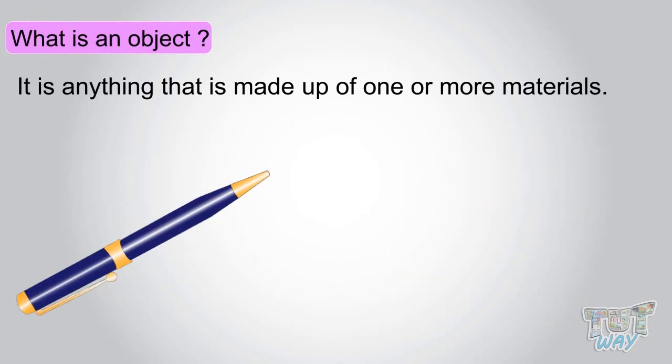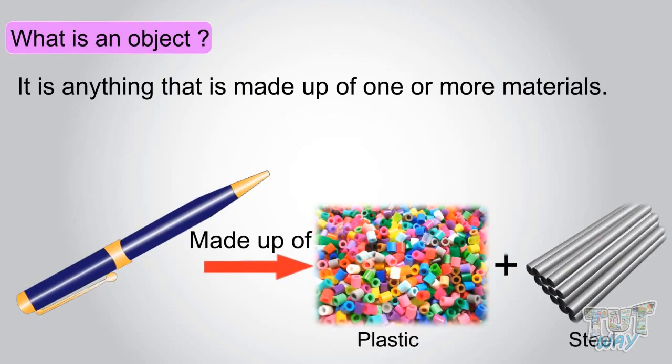This pen is an object made up of two types of materials, plastic and steel.